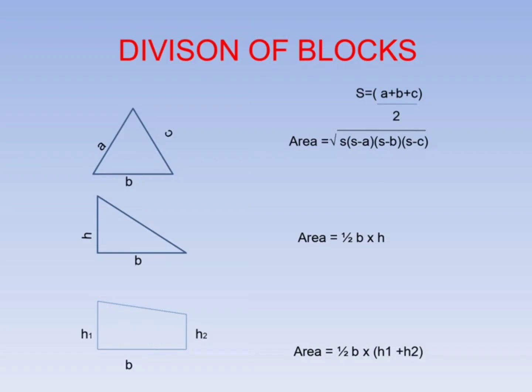If all three sides of triangle are known, then the formula is square root of s into s minus a into s minus b into s minus c, where s is equal to a plus b plus c by 2.